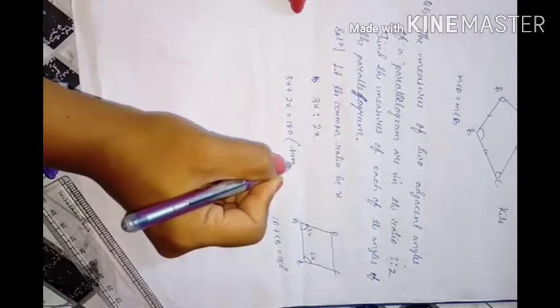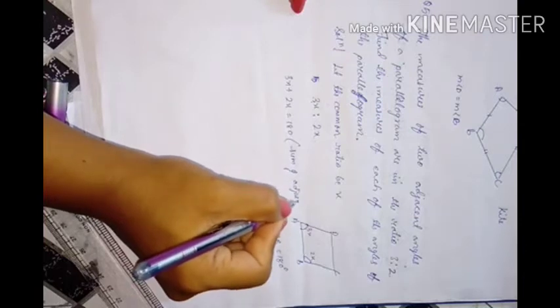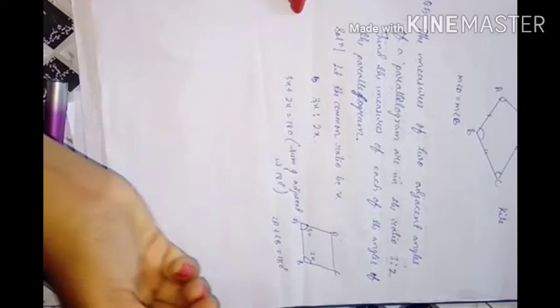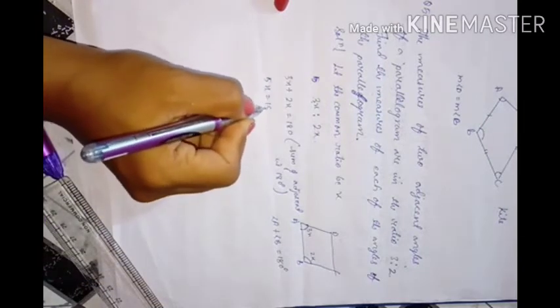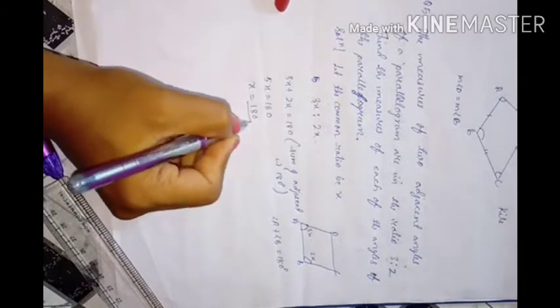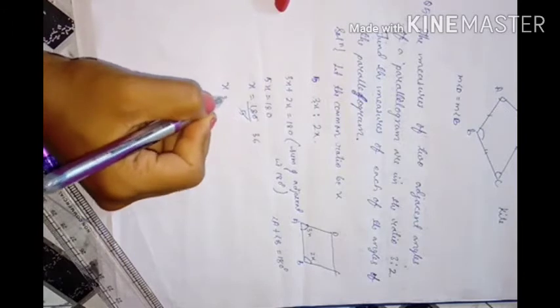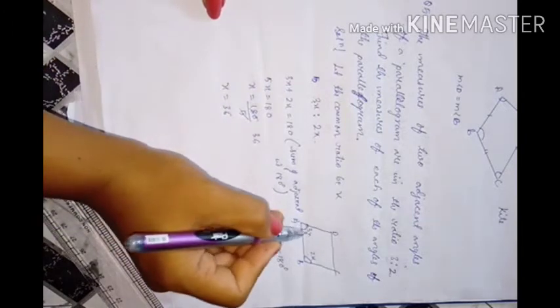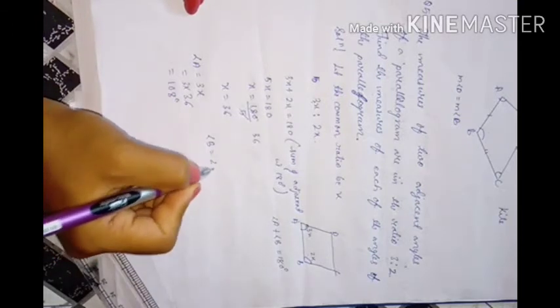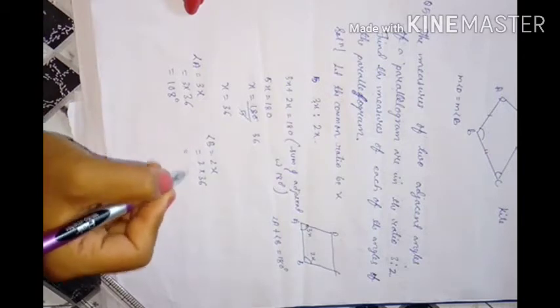Therefore angle A equals 3x equals 3 times 36 equals 108 degrees, and angle B equals 2x equals 2 times 36 equals 72 degrees. The two adjacent angles are 108 degrees and 72 degrees.